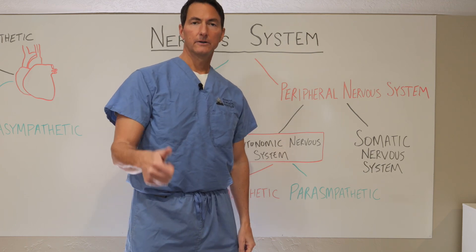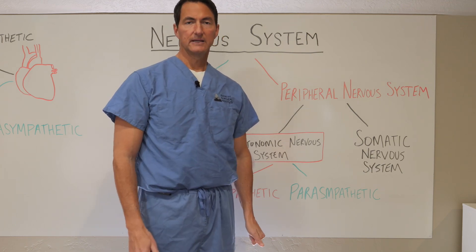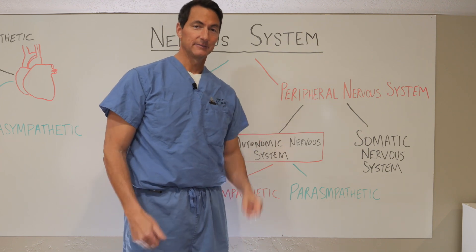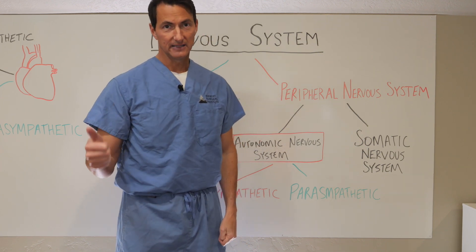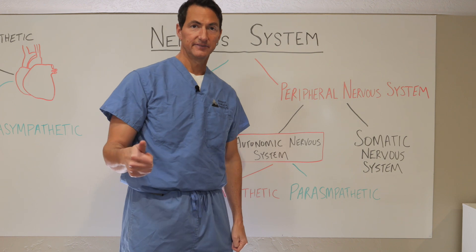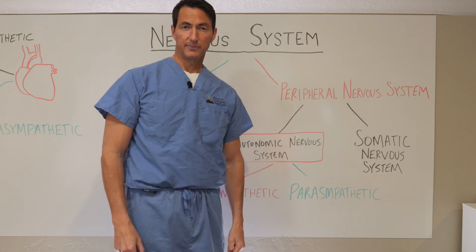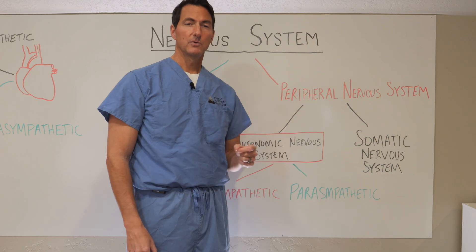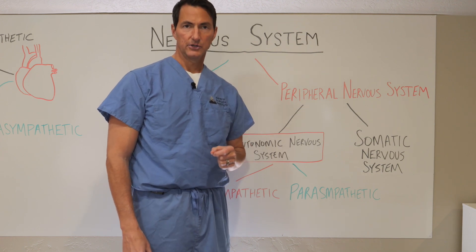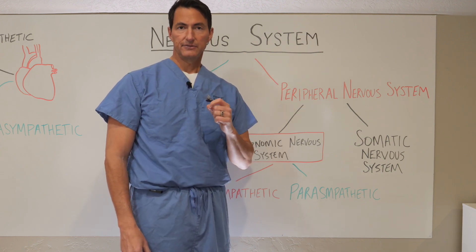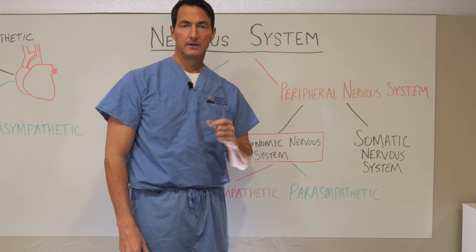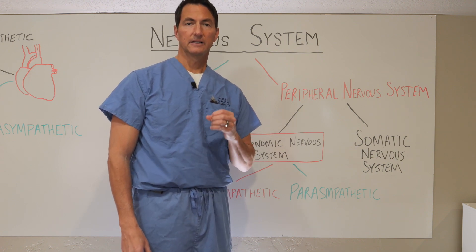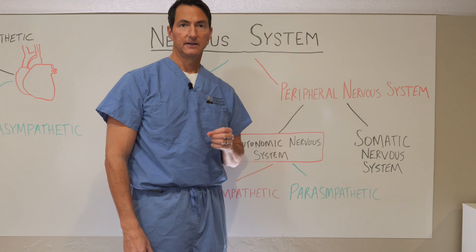Hey everybody. In this video we are going to talk about the cause of obesity and modern metabolic disease. The content in this video is building on what we talked about in the last video, entitled 'The Cause of Obesity and Metabolic Disease.' Today we're talking in more detail about the autonomic nervous system. If you want to understand obesity, diabetes, and metabolic disease, you need to understand the content of these videos.